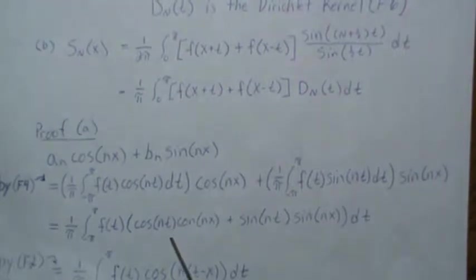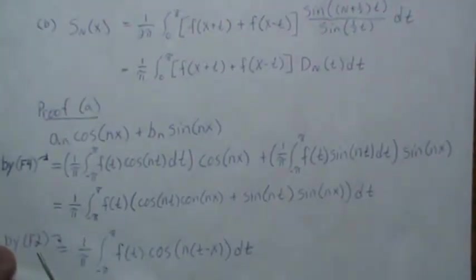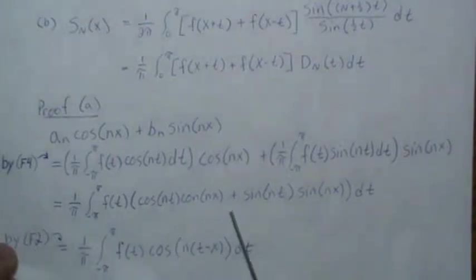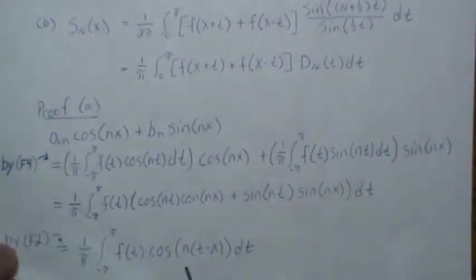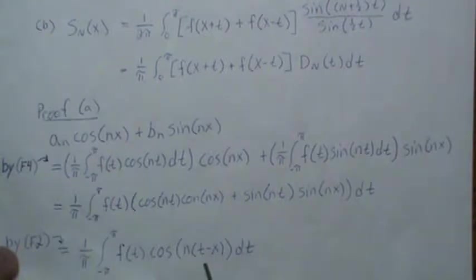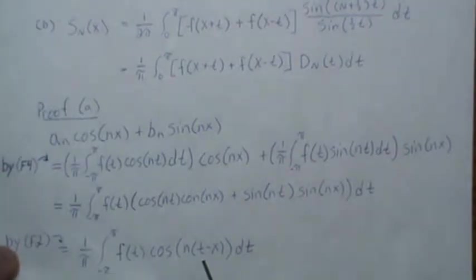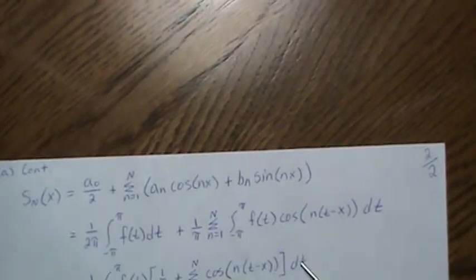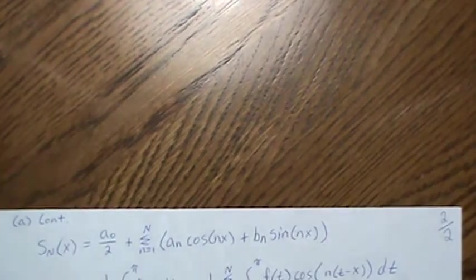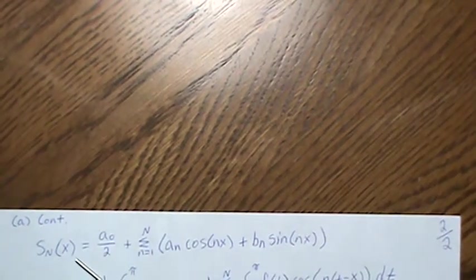This right here can be reduced using a trig identity which we derived in F2. This can be written as a cosine of the difference of these two angles. Then when we put this back in our partial sum...